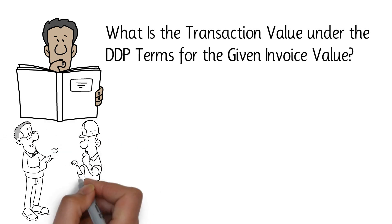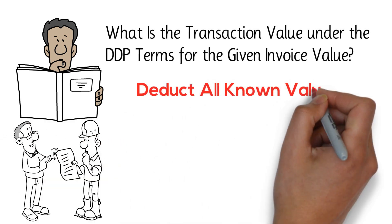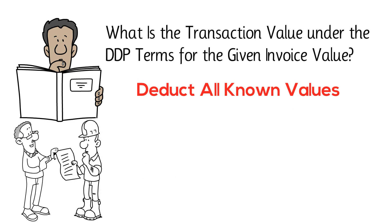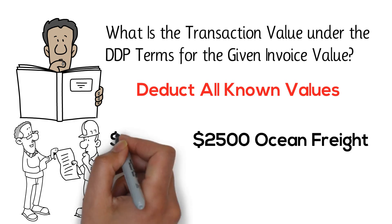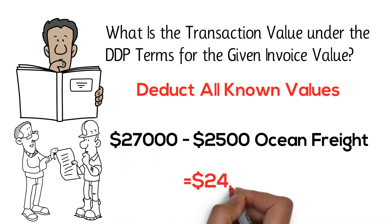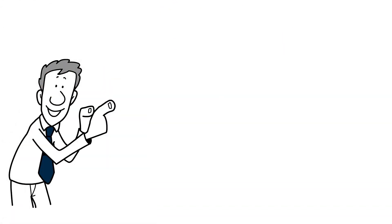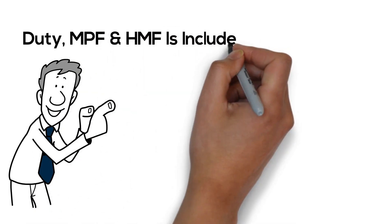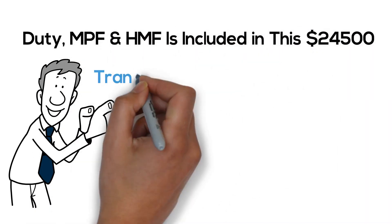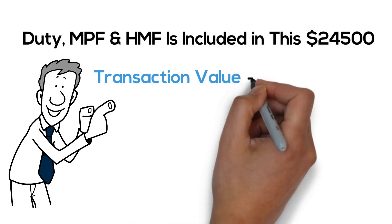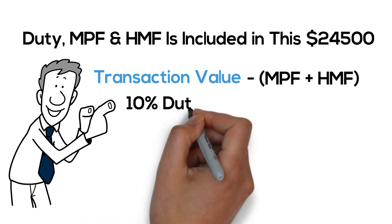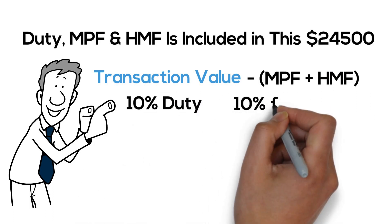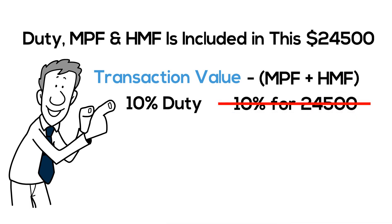So the first thing the broker is going to do is deduct all known amounts. The broker has a copy of the ocean invoice and knows the ocean freight is $2,500, so he deducts that from the $27,000, leaving $24,500. The next thing he needs to do is remove the duty, MPF, and harbor maintenance fee that are included in this $24,500 to get down to the transaction value.